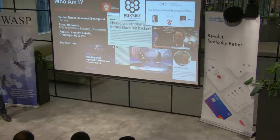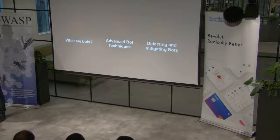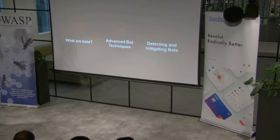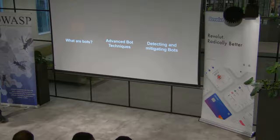We're going to start level-setting at a really high level — 101, what are bots, what do they look like. We'll start looking at some of the more advanced techniques, what they can do, how they can impact your applications. And then we'll finish off by looking at some common techniques we can use to identify bots, some mitigations, and how some of the more advanced bots are now getting around those techniques as well.